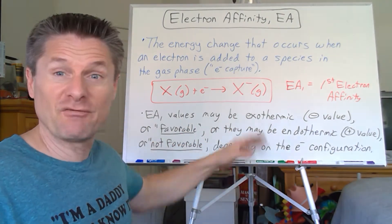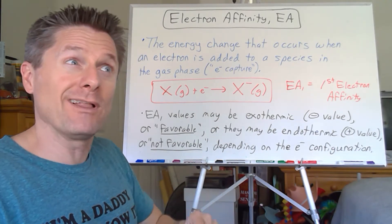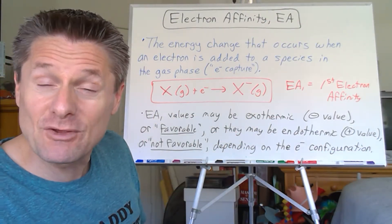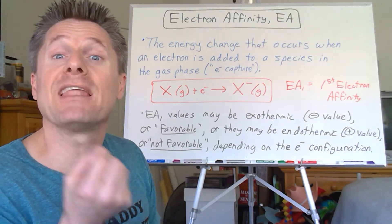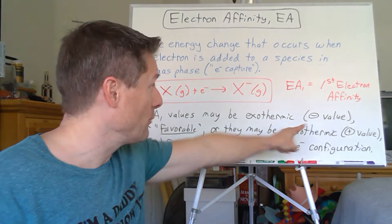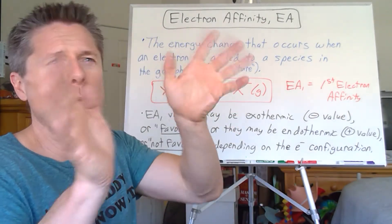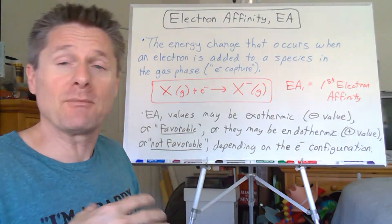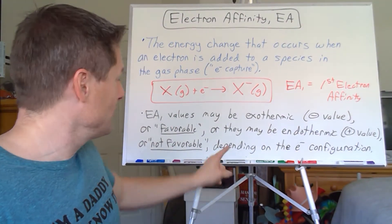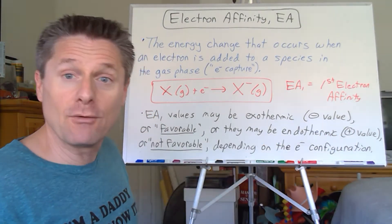You can't really do that with electron affinity, because if some values are negative and some are positive — or if they're all negative and you say 'greater,' well, is it greater numerically, which would mean it's a lower value? You see the confusion? So when I talk about electron affinities, I talk about: is it more favorable? Is that process more favorable? If it goes to a lower energy state with a negative value, it's exothermic. Or is it not favorable? It doesn't want the electron, and it goes up in energy — that would be endothermic. Depends on the electron configuration.